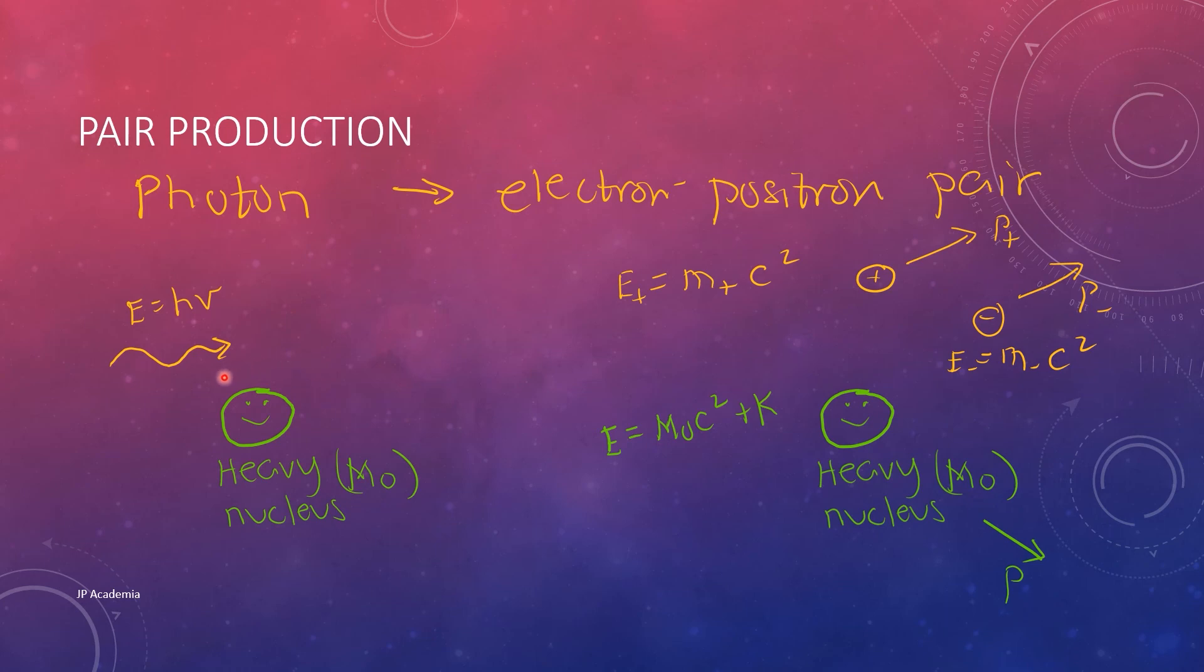This cannot occur in empty space, so that's why we have this heavy nucleus here. The nucleus will have a negligible recoil kinetic energy due to its large mass. By conservation of energy alone, we have this equation, ignoring the heavy nucleus.